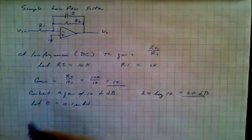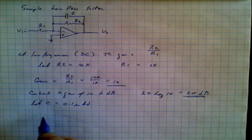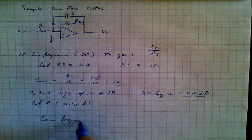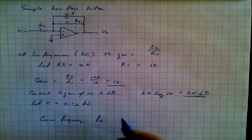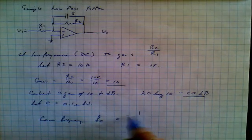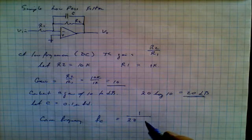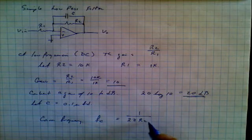And so we're going to introduce a brand new term. And that is the corner frequency, corner frequency. We just call it f, little c for corner. And that's equal to 1 over 2 pi times R2 times C.